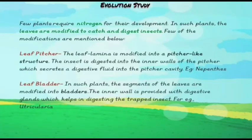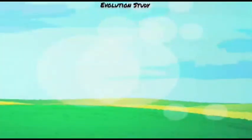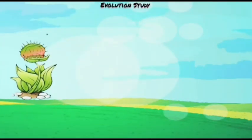In the leaf pitcher, the leaf lamina is modified into a pitcher-like structure. The insect is digested by the inner walls of the pitcher, which secretes digestive fluid into the pitcher cavity — for example, Nepenthes. In a leaf bladder, the segments of the leaves are modified into bladders. The inner wall is provided with digestive glands which help in digesting the trapped insect — for example, Utricularia.